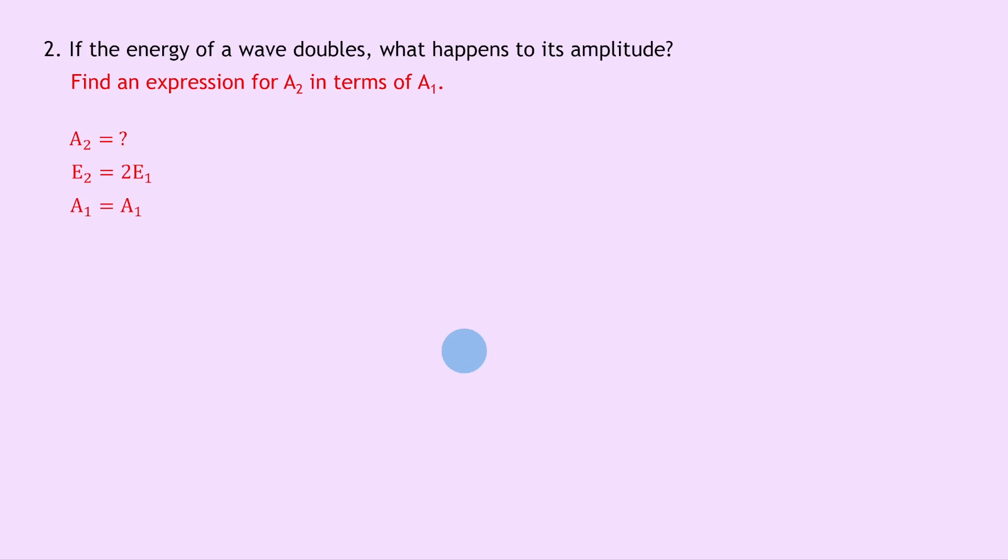Therefore, writing down our equation relating the energy and amplitude of a wave—that's not on your relationship sheet in the exam—we have E₁ over A₁ squared equals E₂ over A₂ squared. Remember this just tells us the energy divided by amplitude squared is equal to a constant. So what we can then do is sub in our expressions from the left, so we get E₁ over A₁ squared is equal to 2E₁ over A₂ squared.